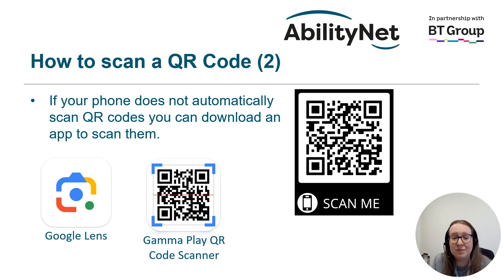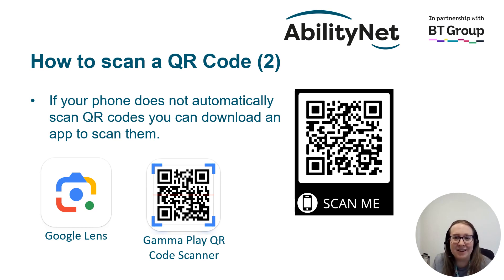Once you have downloaded one of those apps or you are using your camera, it might be a nice idea to pause the video here and have a go at scanning the QR code on the right-hand side of the screen. This QR code is going to take you to the AbilityNet website and is a good way to practise using those QR code scanners.